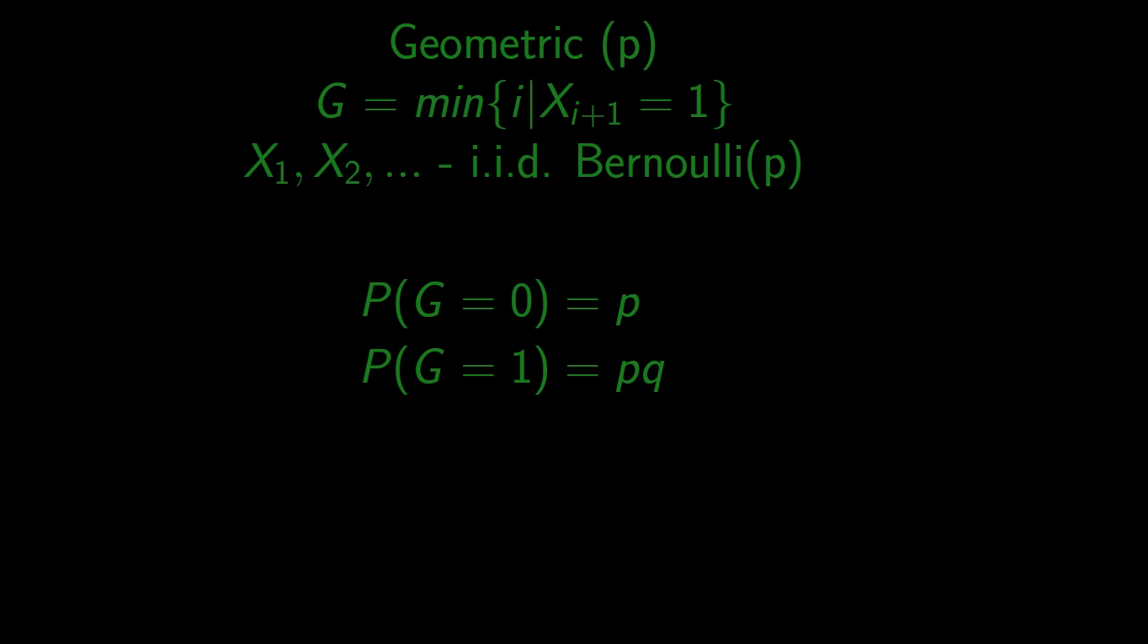For the result to be equal to 2, we need to succeed in the third trial, which also has probability p, times the probability of failing in previous two trials, so q to the power of 2.